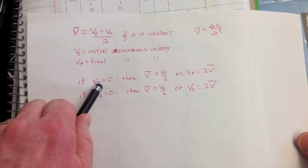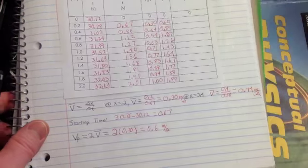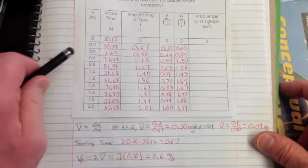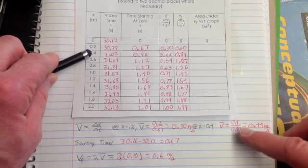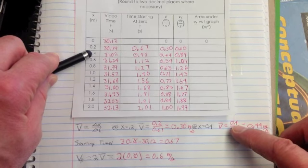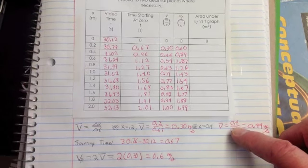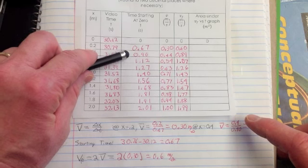We're assuming my initial velocity is zero. So that means I always have to take the distance from zero. So my delta X will be 0.2, and on my second one it will be 0.4, right here.